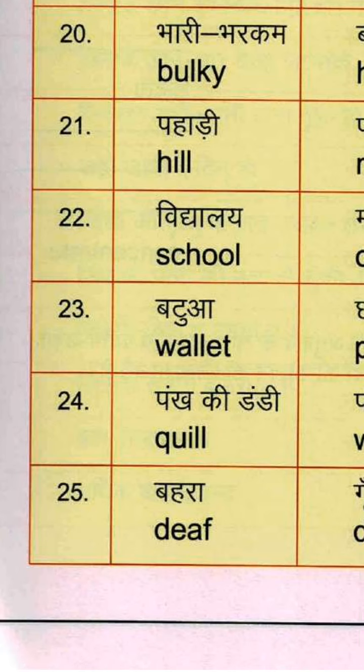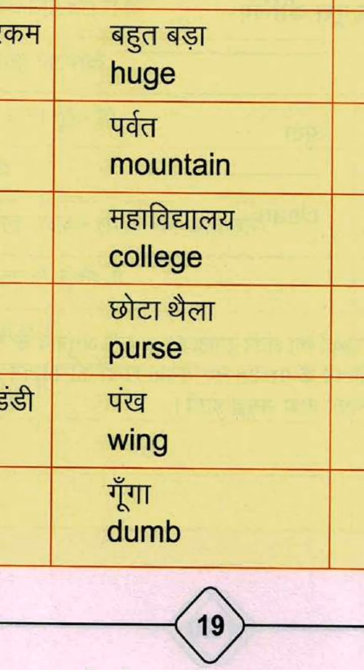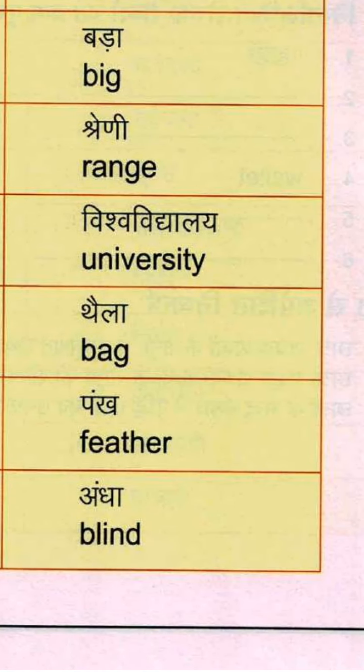Twenty-second group: Vidyalay means School — S-C-H-O-O-L. Maha Vidyalay means College — C-O-L-L-E-G-E. And Vishwa Vidyalay means University — U-N-I-V-E-R-S-I-T-Y.